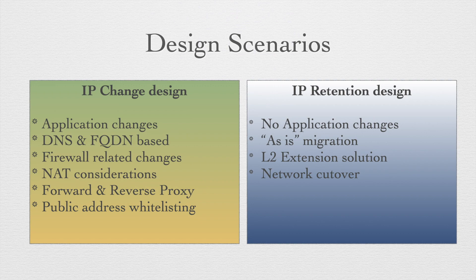Many enterprises do not have application architecture and all interdependencies properly understood — at least for part of their legacy landscape. Hence, we may need to go for the second approach: retaining the server or application address in the target data center. However, IP retention introduces far more network complexity than the previous option. At the same time, it simplifies post-migration tasks related to application and infrastructure changes. Since it facilitates an as-is migration, this is the preferred option in many projects. The crucial part is the design of a Layer 2 extension solution between source and target network — that's the only way for servers to retain their IP in the target when there are still active IP addresses in the same subnet in the source.